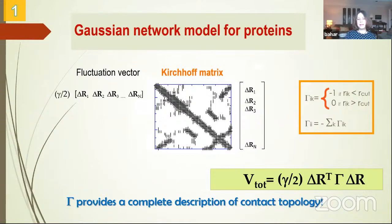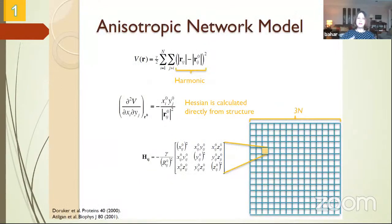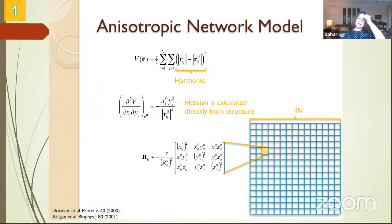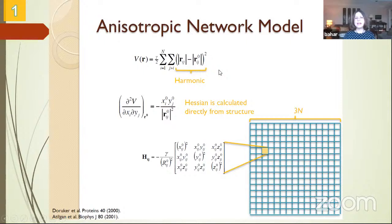The connectivity matrix gamma provides the complete description. The extension to three dimensions is the anisotropic network model. Instead of an N×N connectivity matrix, we have a 3N×3N Hessian composed of 3×3 super elements, each representing the second derivative of the potential with respect to equilibrium coordinates. The potential itself is again a sum of harmonics — extremely simple.